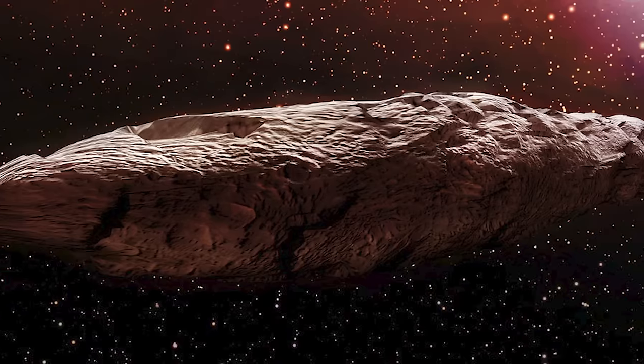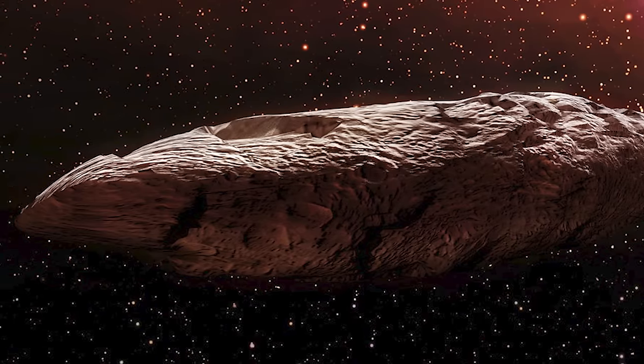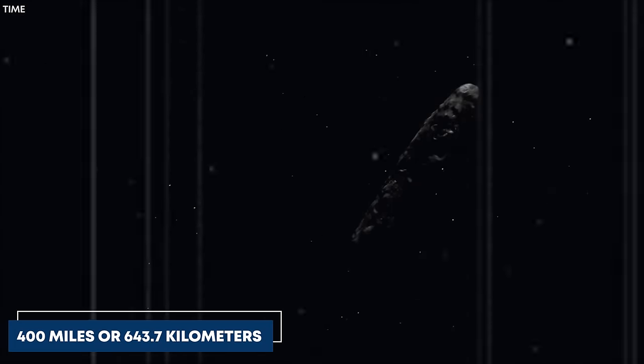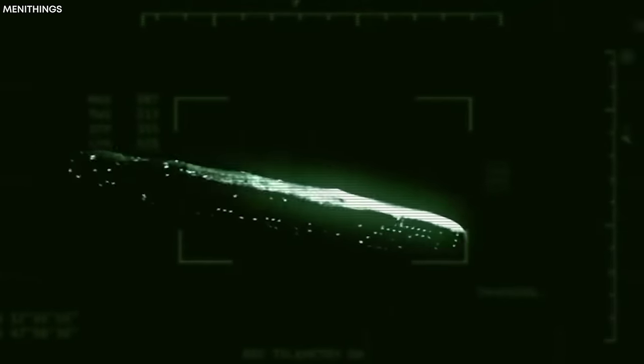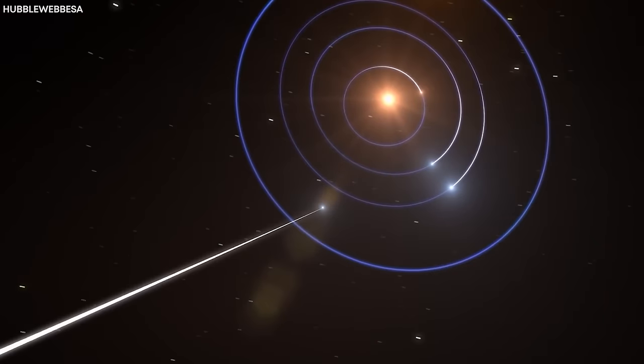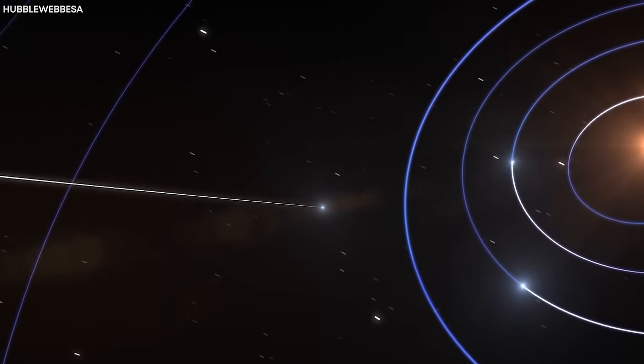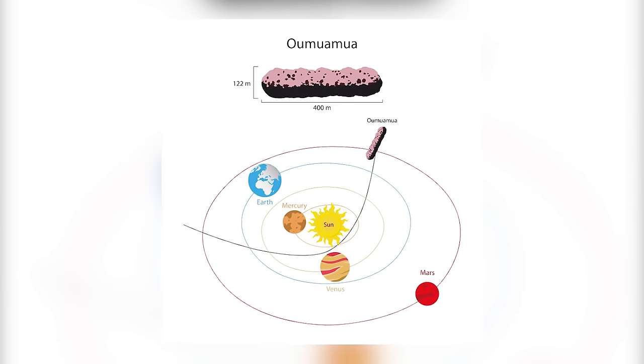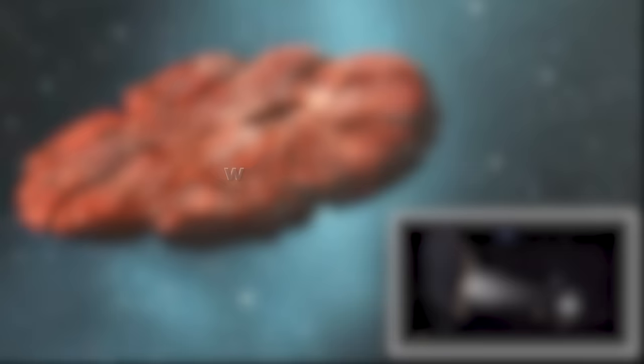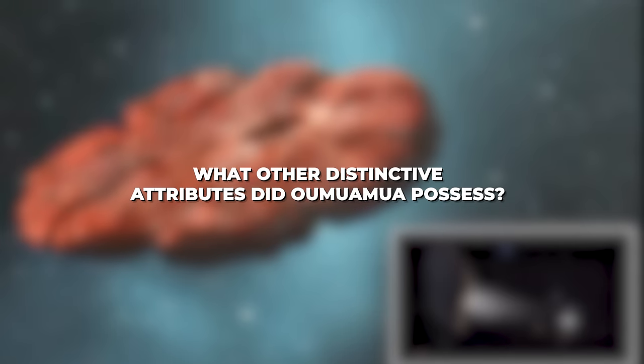Furthermore, meticulous measurements disclosed that Oumuamua stretched about a quarter of a mile or 0.4 kilometers in length. Astonishingly elongated, its length was roughly 10 times greater than its width. This unusual appearance sharply contrasted with the predominantly spherical space objects prevalent within our solar system. It was just one piece of the puzzle that further shrouded Oumuamua's identity in mystery.